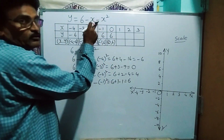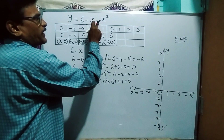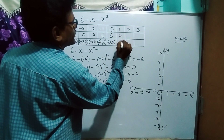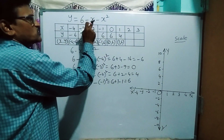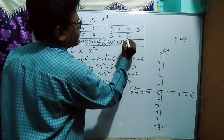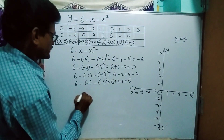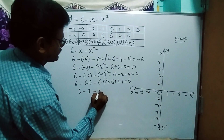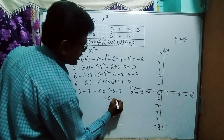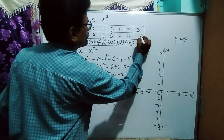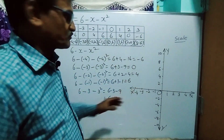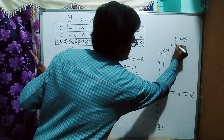For x = 1: 6 - 1 - 1² = 6 - 1 - 1 = 4. Pair: (1, 4). For x = 2: 6 - 2 - 2² = 6 - 2 - 4 = 0. Pair: (2, 0). For x = 3: 6 - 3 - 3² = 6 - 3 - 9 = -6. Pair: (3, -6). These pairs are sufficient to plot the graph.